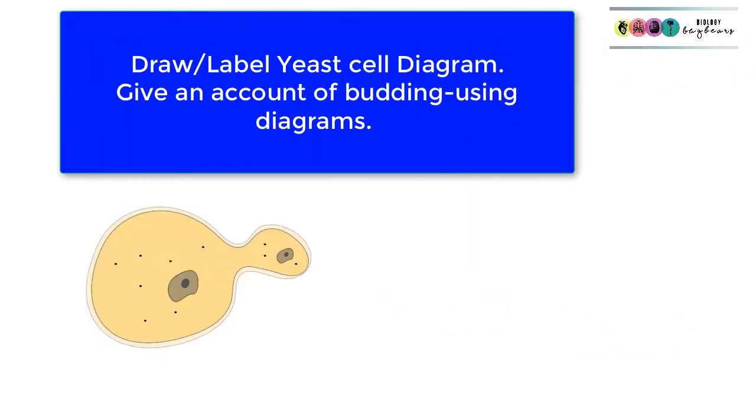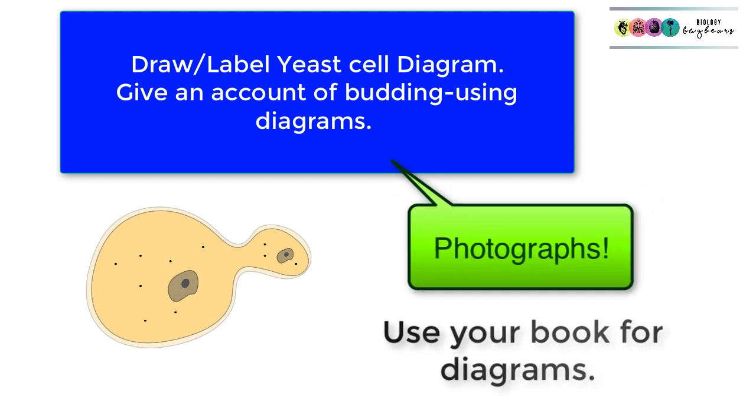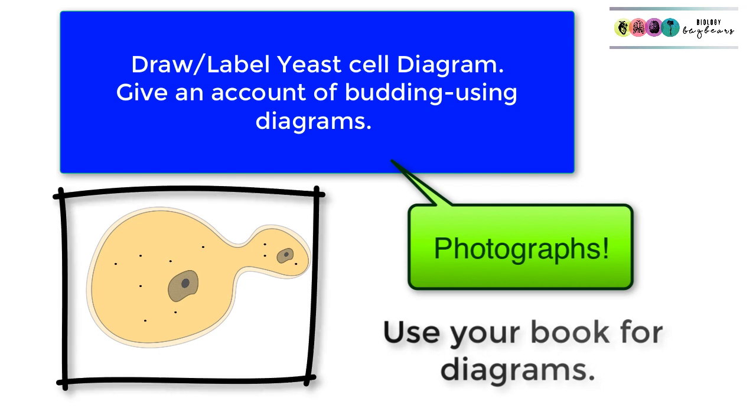So that was yeast. Make sure you can draw and label a diagram of a yeast cell and recognize photographs, really important, and make sure you can give an account of budding using diagrams. Check that out in your book.